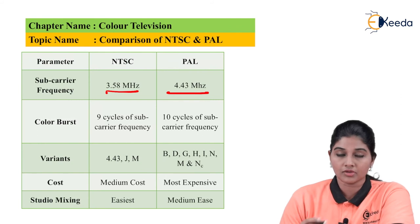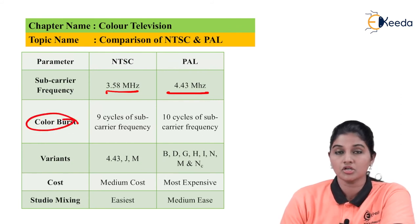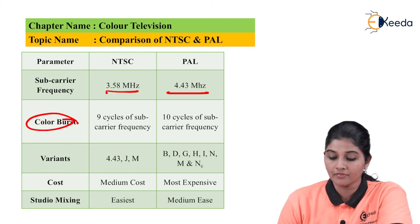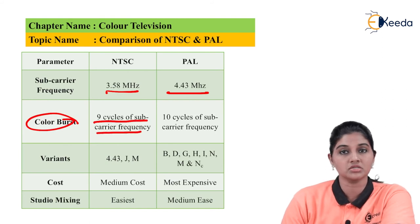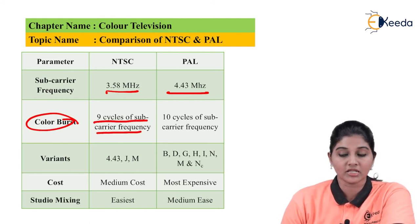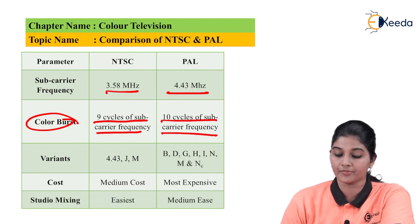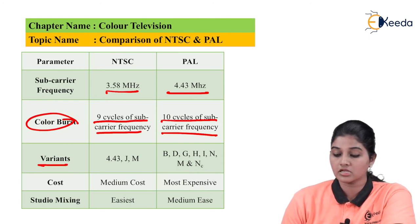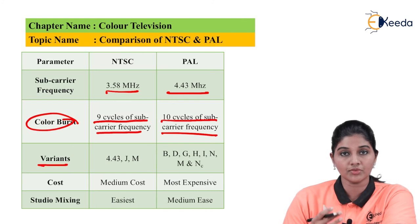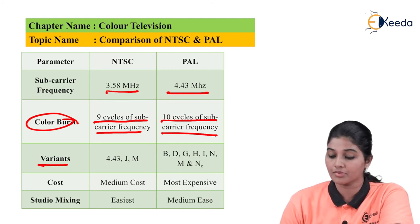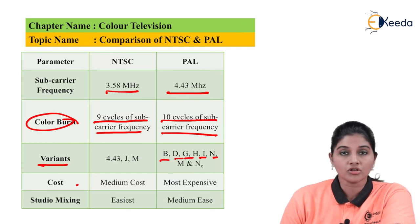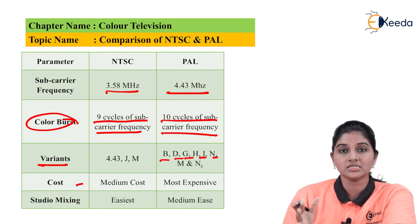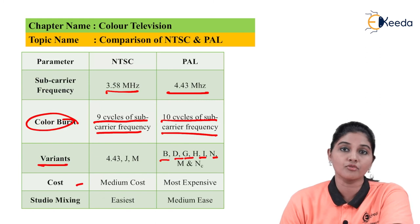The next comparison is based on color burst. In case of NTSC, 9 cycles of subcarrier frequencies are required, and in case of PAL, 10 cycles of subcarrier frequencies are required. For variants, NTSC uses 4.43 J and M variants, and in case of PAL, depending upon the frequencies there are different variants: B, D, G, H, I, N, M, and Nc. Cost-wise, NTSC is less costly compared to PAL.